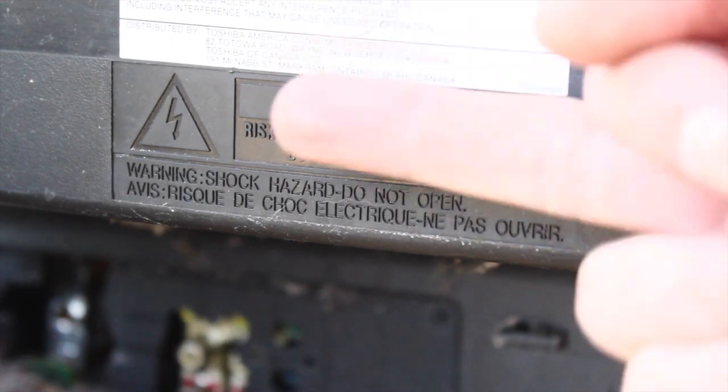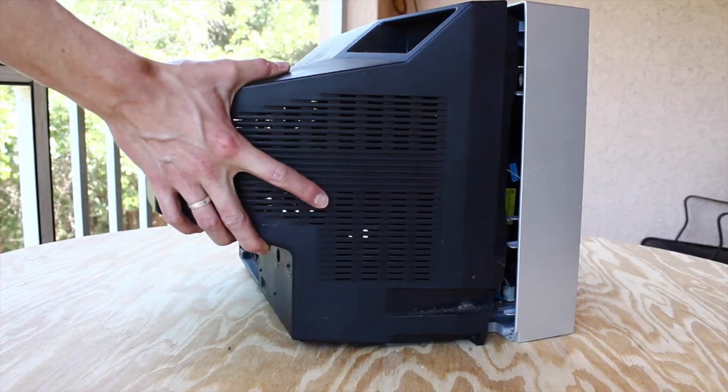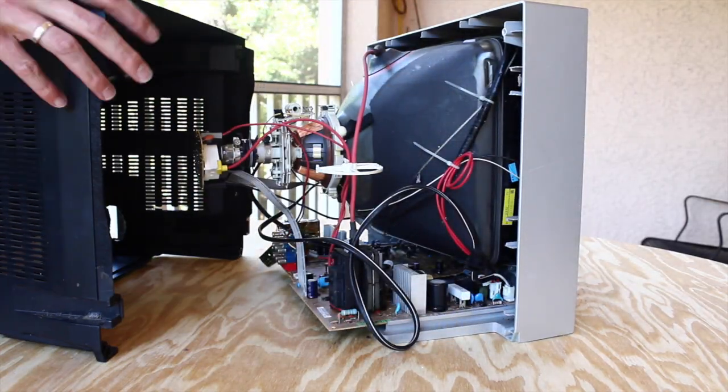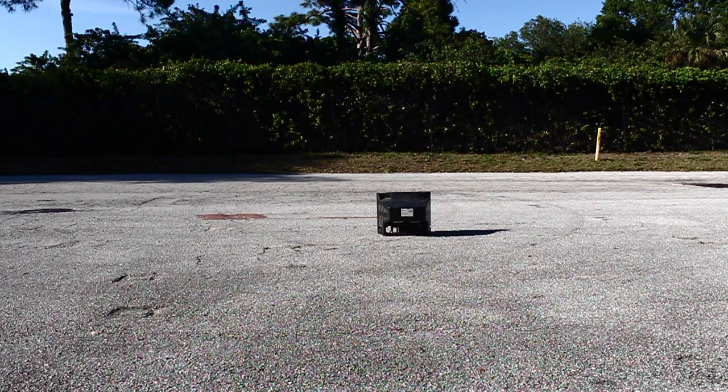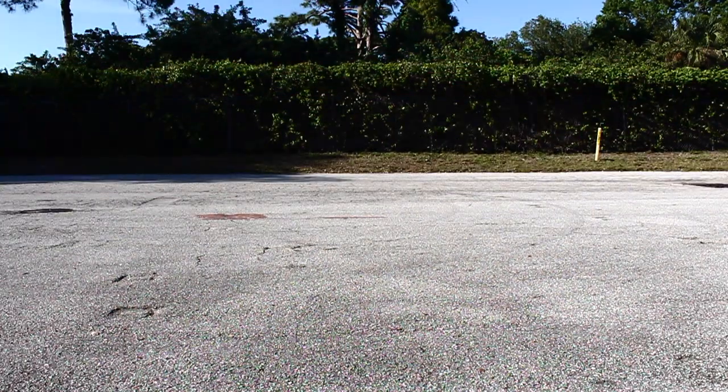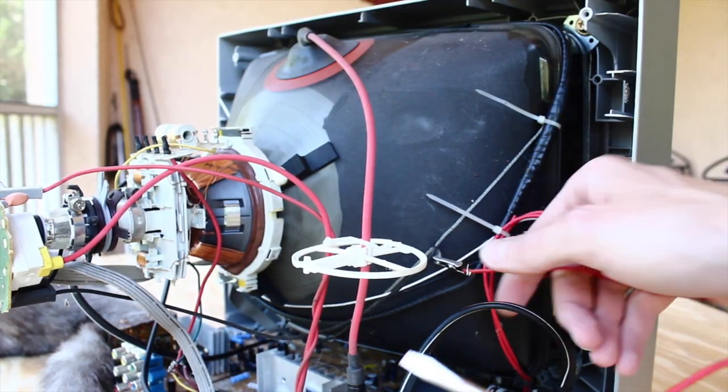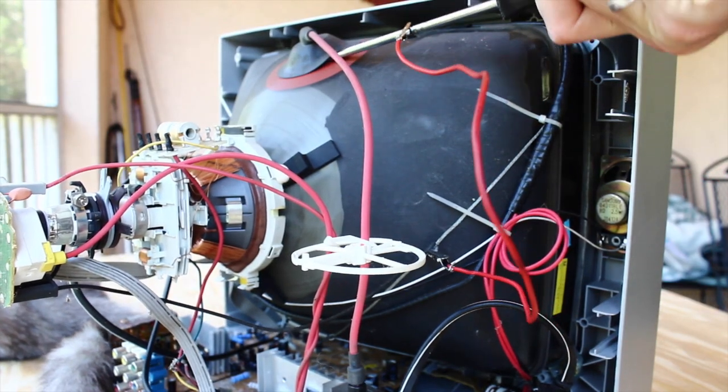The next thing we need to do is completely disregard all warnings on the back of the case of the television and remove it. And when I say disregard, I really mean disregard. I hate warnings. Warning, before you continue, you must discharge the flyback transformer.